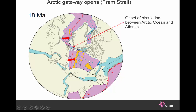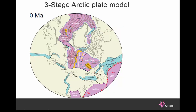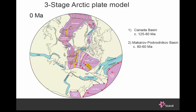At the risk of hammering the point, we have a three-stage Arctic plate model: firstly, the rotational opening of the Canada Basin in the early Cretaceous; secondly, the opening of the Makarov-Podvodnikov Basin in the late Cretaceous, completely orthogonal to that; and then the opening of the Eurasia Basin in the northeast Atlantic from the beginning of the Tertiary up to the present. I want you to appreciate the significant changes in plate vector that happened as the Arctic Ocean developed, and that this is a small confined ocean still only tenuously linked with the northeast Atlantic. When you get rotational opening in a confined space, you will get shear on the margins.